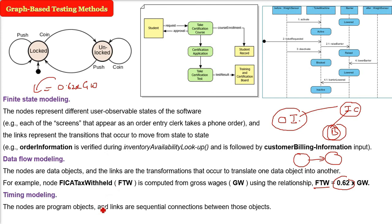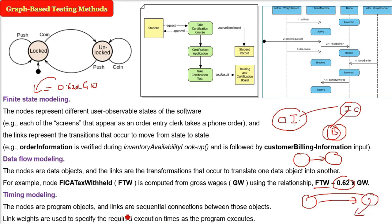In timing modeling, the nodes are or they can be program objects. And the links are the sequential connections between those objects. Again, in timing modeling, the nodes can be program objects. The links are sequential connections. The link weights are used to specify the required execution times as the program executed. Let me tell you again the link weights are number of execution time required as the program is executing. So these are different models you can use with reference to the graph.